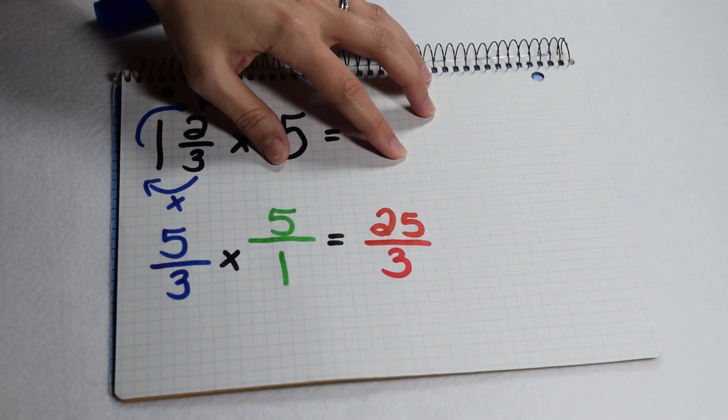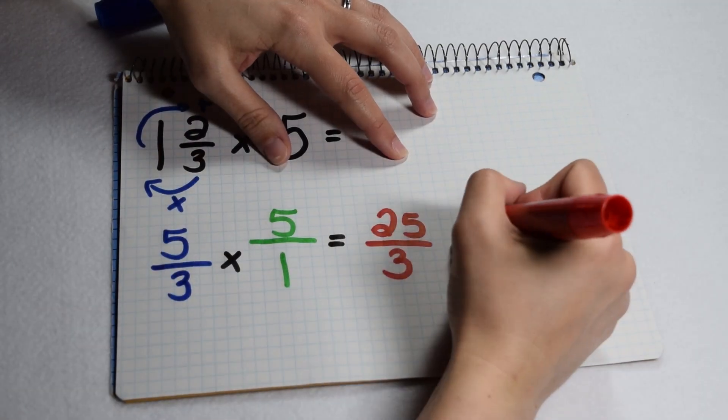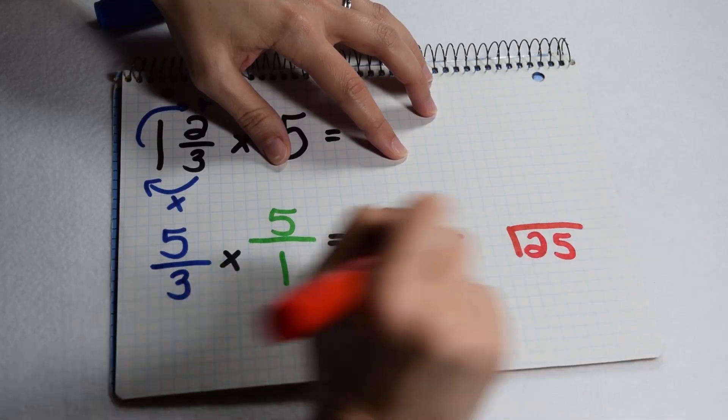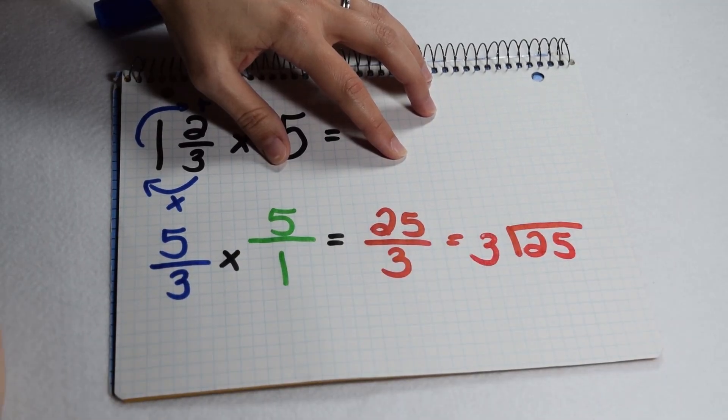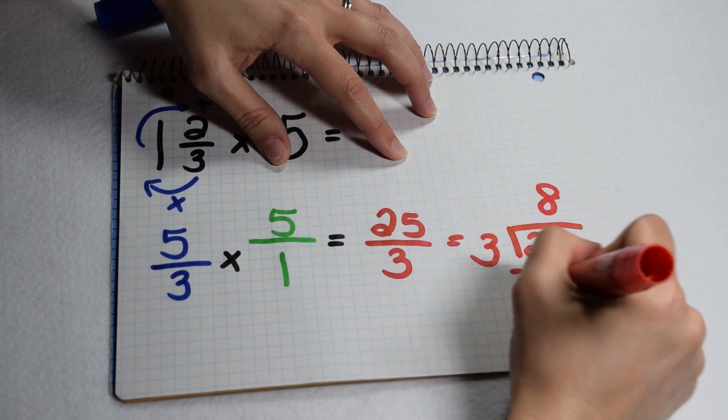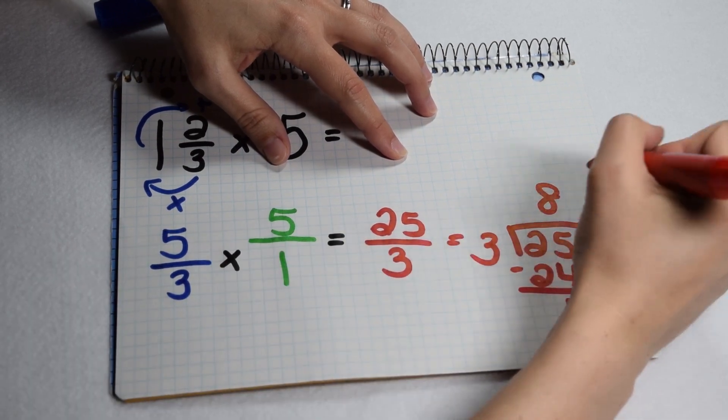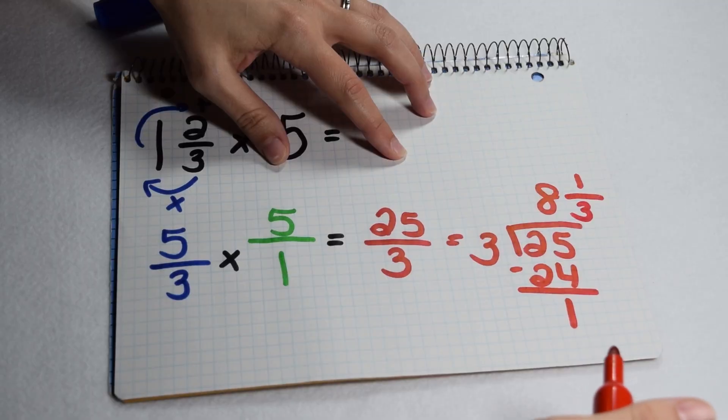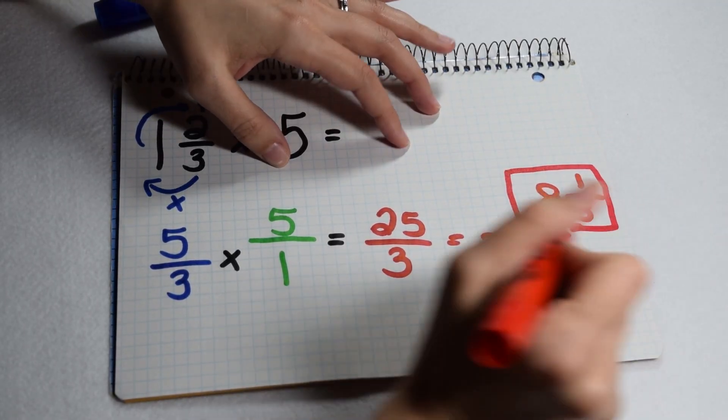Twenty-five thirds is an improper fraction, so I can change that to a mixed number by dividing my numerator of 25 by my denominator of three. Three goes into 25 eight times. When I subtract 24, I have one left over, and that remainder of one becomes my numerator with my denominator of three staying the same. So in lowest terms, my solution is eight and one-third.